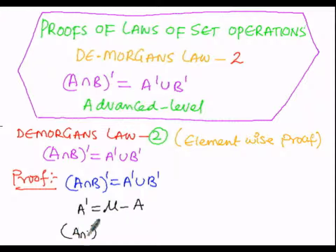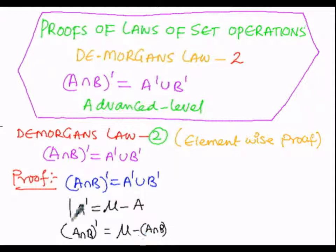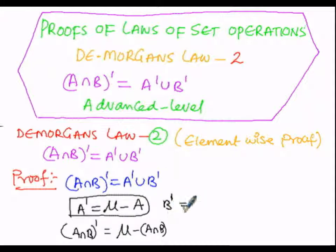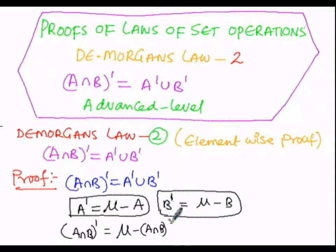In order to get A intersection B whole complement, this bracket A intersection B must be subtracted from the universal set mu. So A dash equals mu minus A. Similarly, B dash equals mu minus B. And A intersection B whole complement equals mu minus A intersection B. With the help of these three conditions, we can prove that A intersection B whole complement equals A dash union B dash.